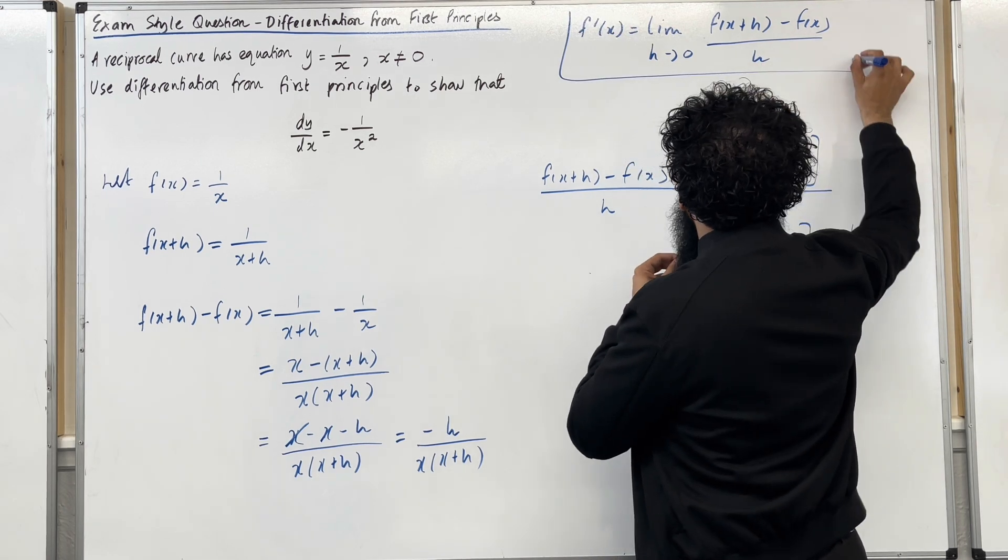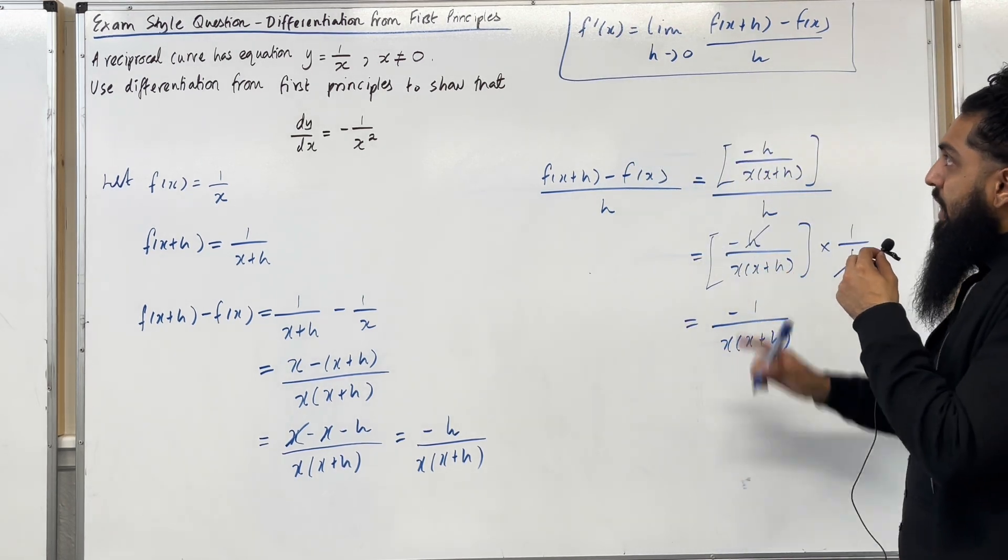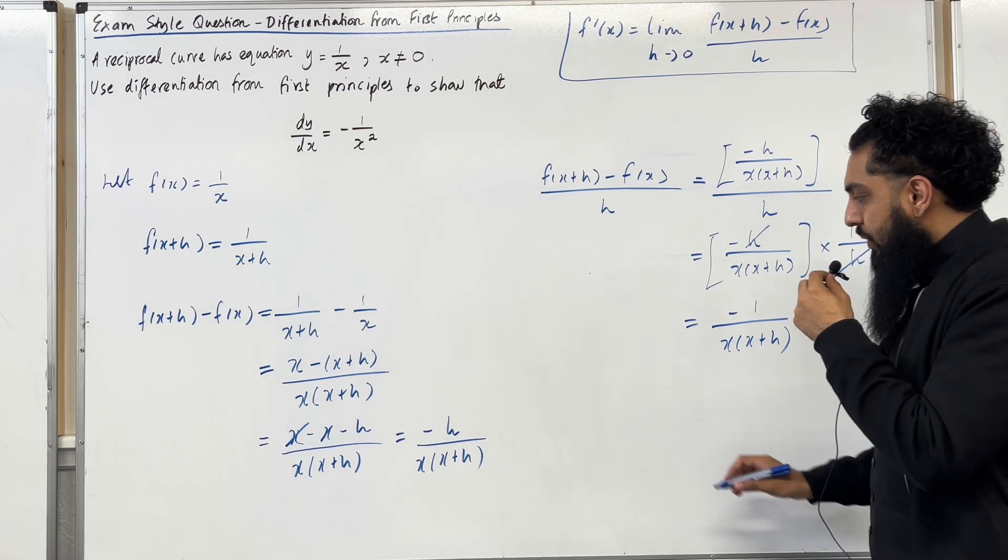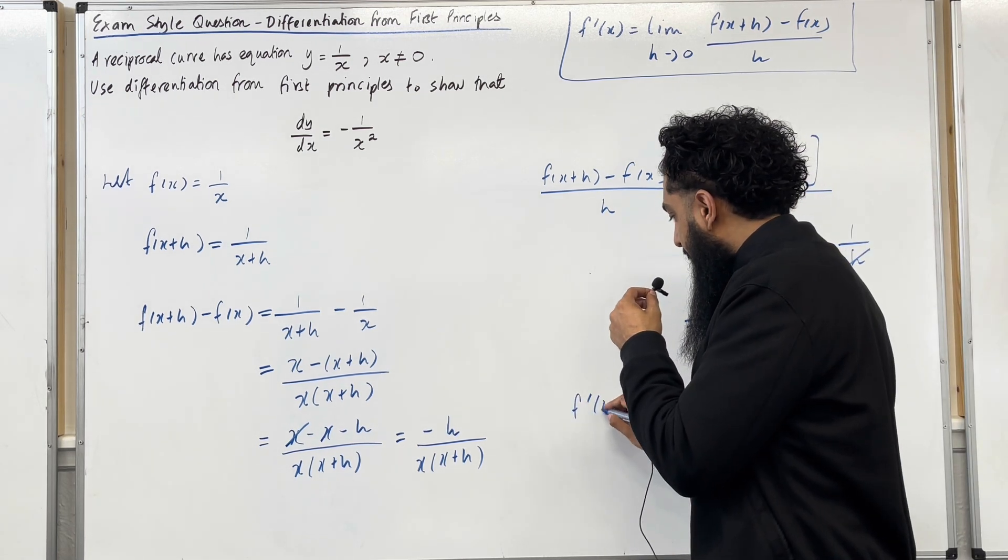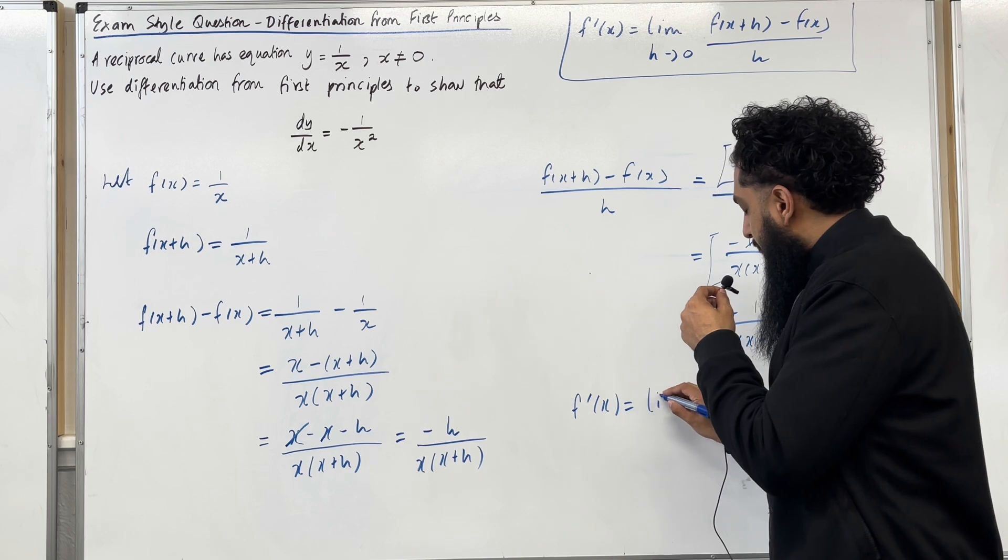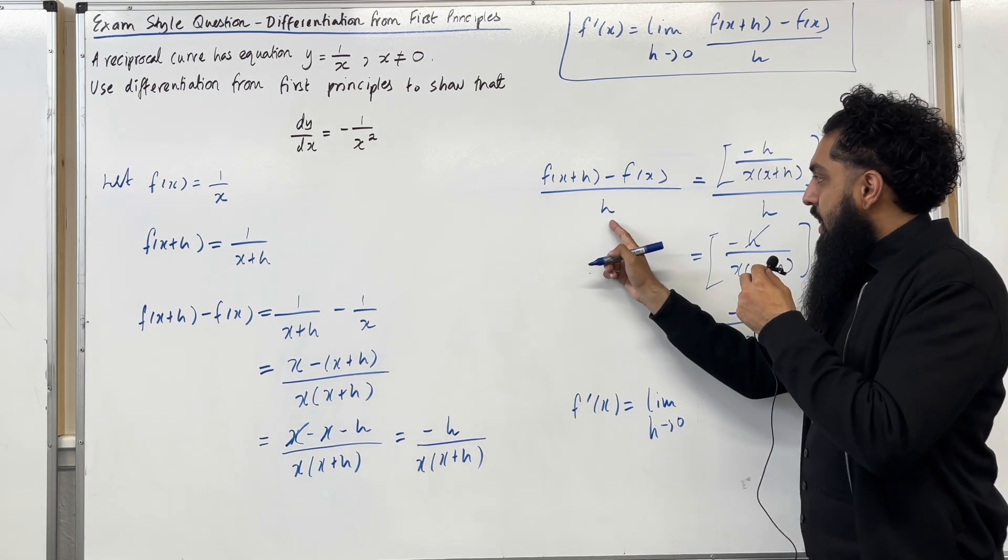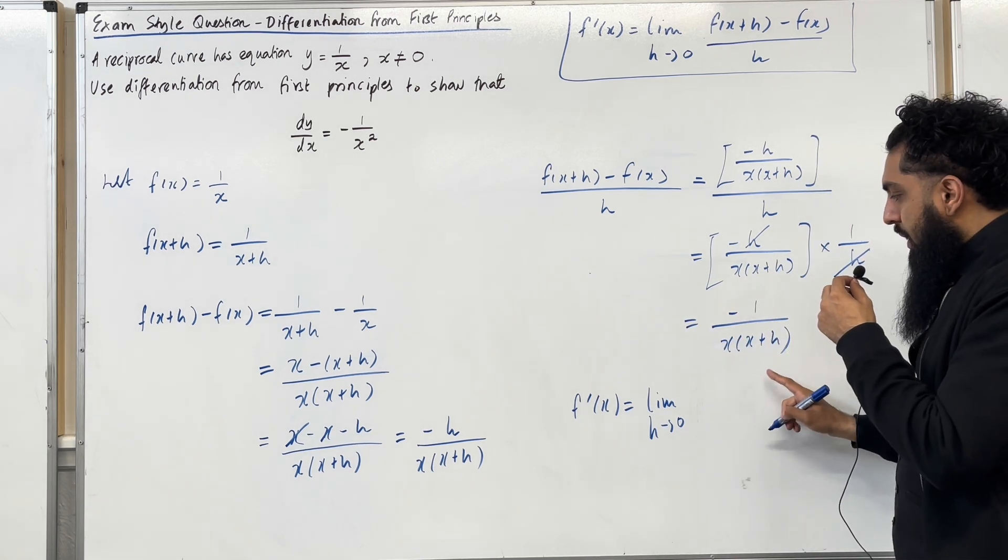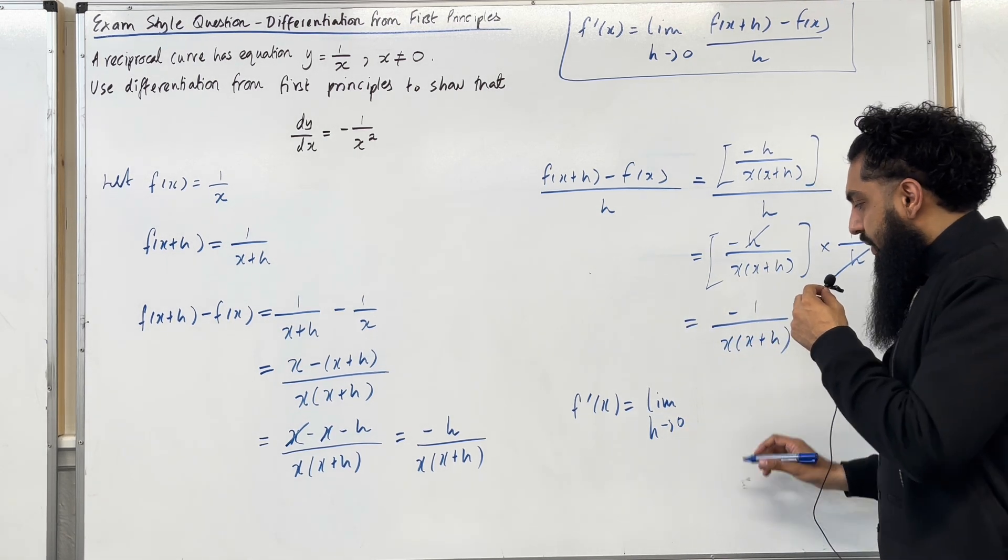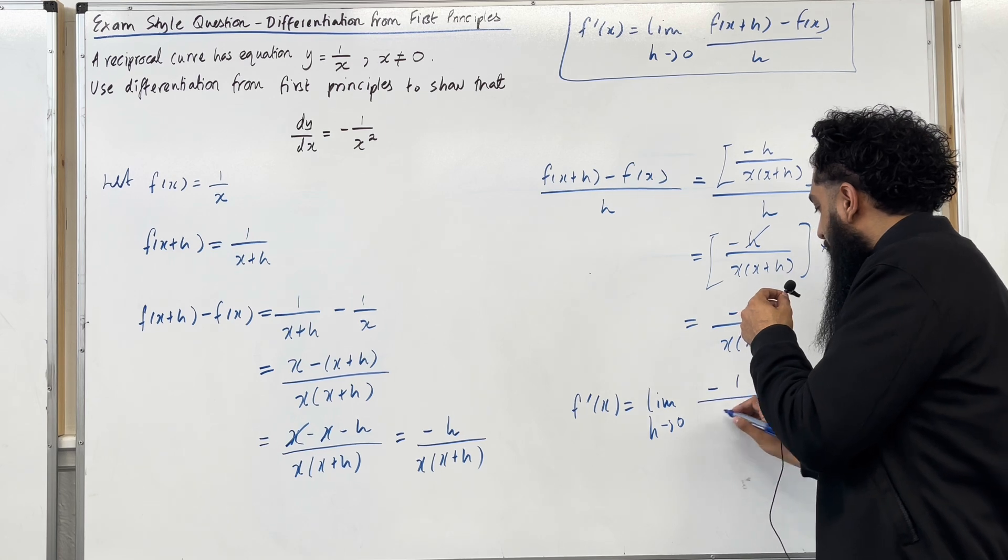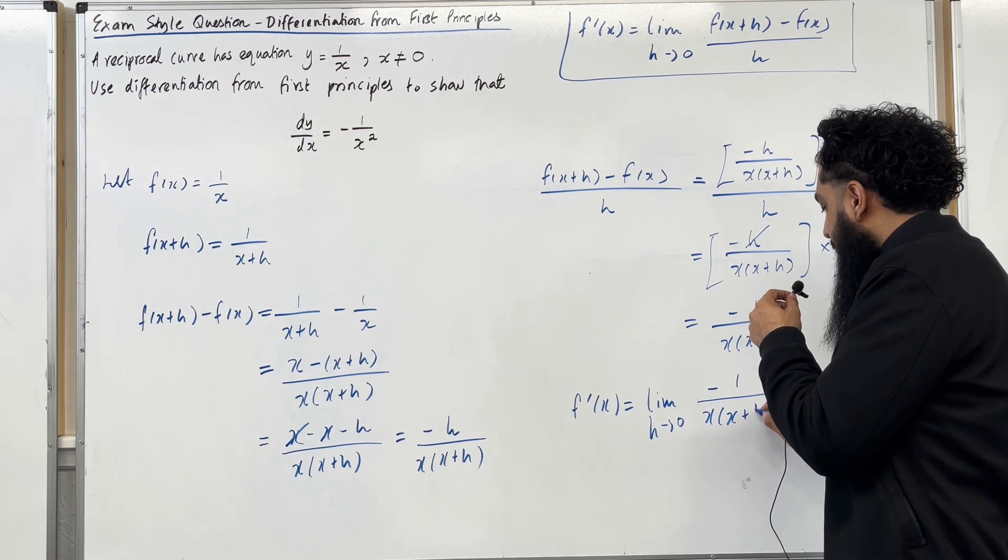This is given in the formula booklet. So using differentiation from first principles, f dash of x is equal to the limit as h tends to 0. That fraction there simplifies to limit as h tends to 0 of minus 1 over x lots of x plus h.